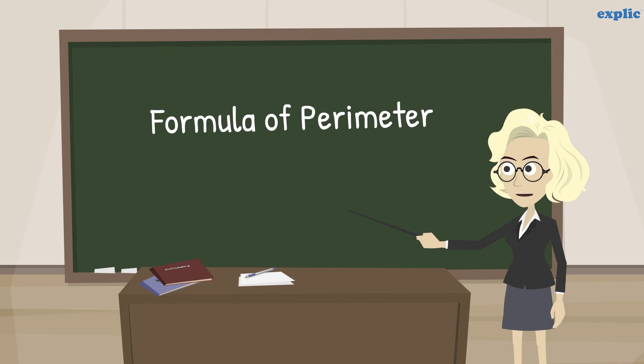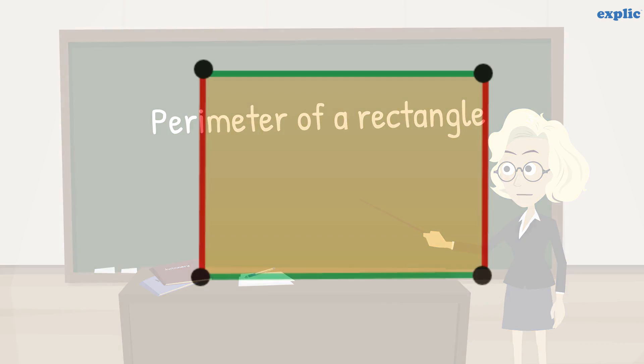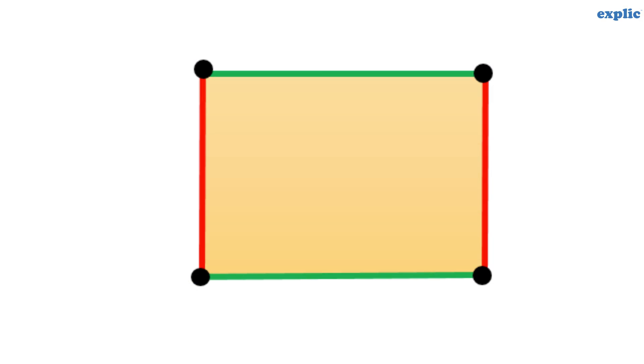Let's find the formula of the perimeter for some basic shapes. Let's start with rectangle. As we know that, a rectangle is a quadrilateral that has opposite sides equal and all angles are 90 degree.